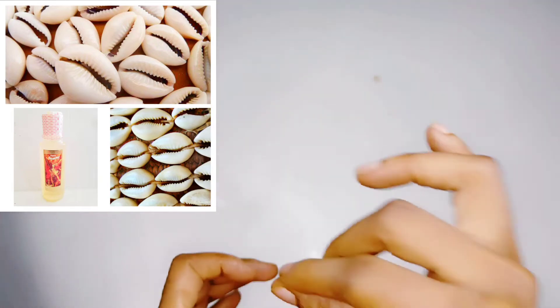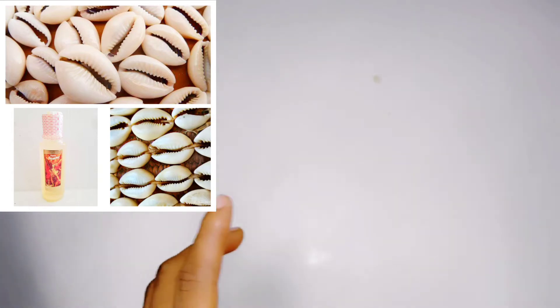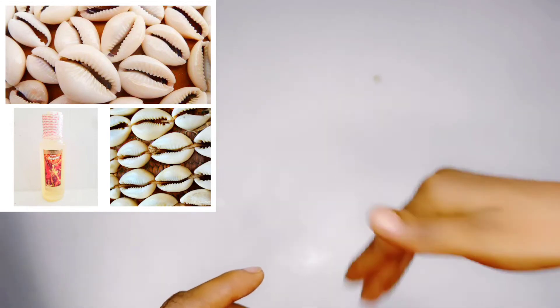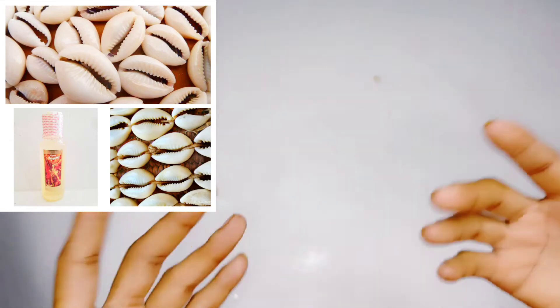And after washing it, you go ahead and put those cowries in a container or a rubber. Put it and cover it, and dig a ground and bury that cowrie inside the river. And cover it. When you cover it, go home. Leave it for three days.